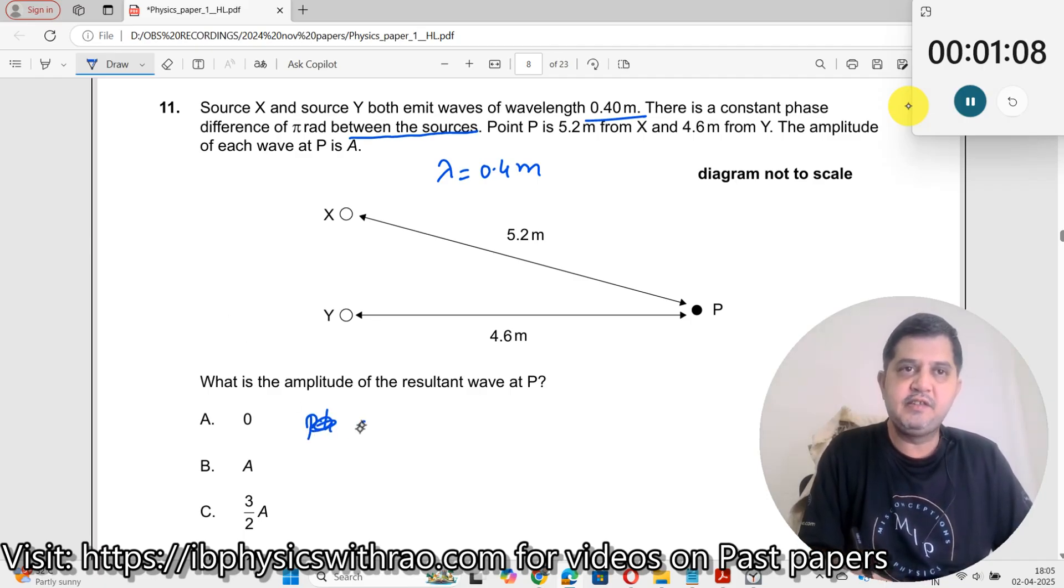Let me write down, phase difference between the wave is equal to π radians, π radians.